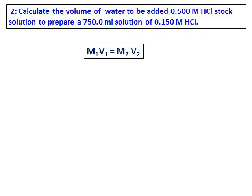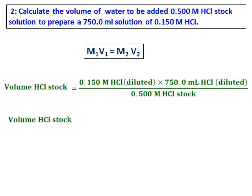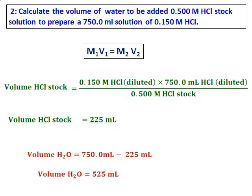Calculate the volume of water to be added to a 0.500 molar HCl stock solution to prepare a 750 milliliter solution of 0.150 molar HCl. Read the question carefully — they are asking for the amount of water to be added. So first we need to find the volume of stock solution to take using M1V1 equals M2V2. The volume of HCl stock solution comes out as 225 milliliters. Since the total volume needed is 750 milliliters, the amount of water to add is 525 milliliters.